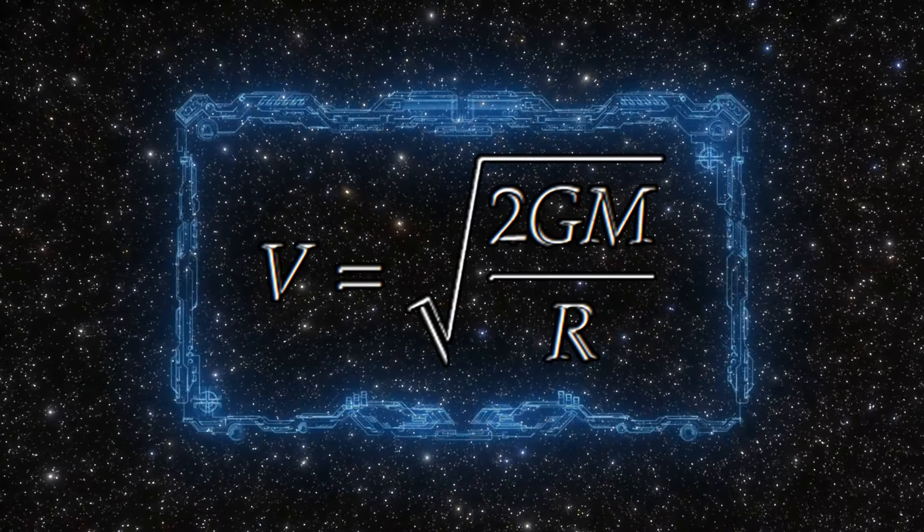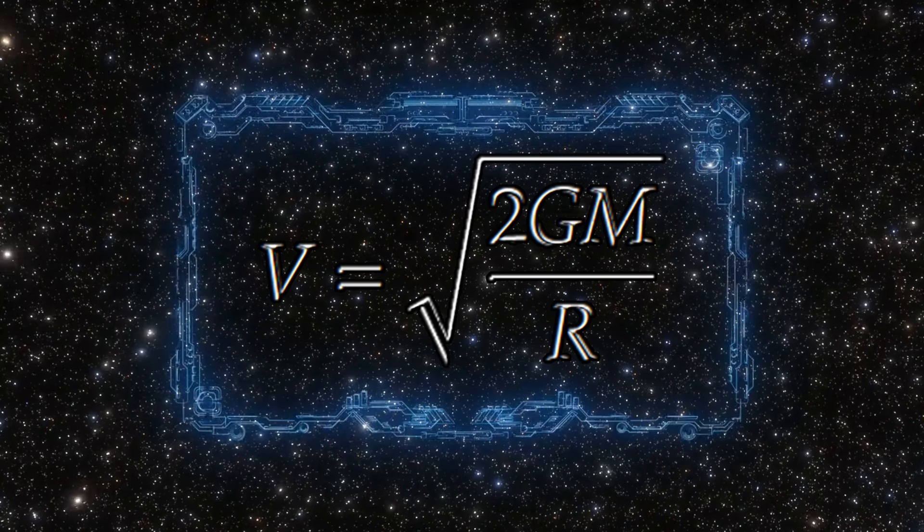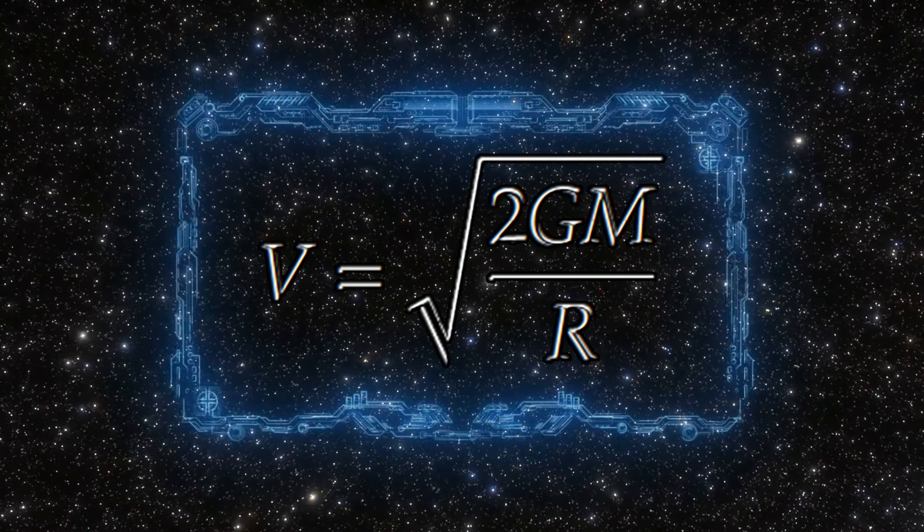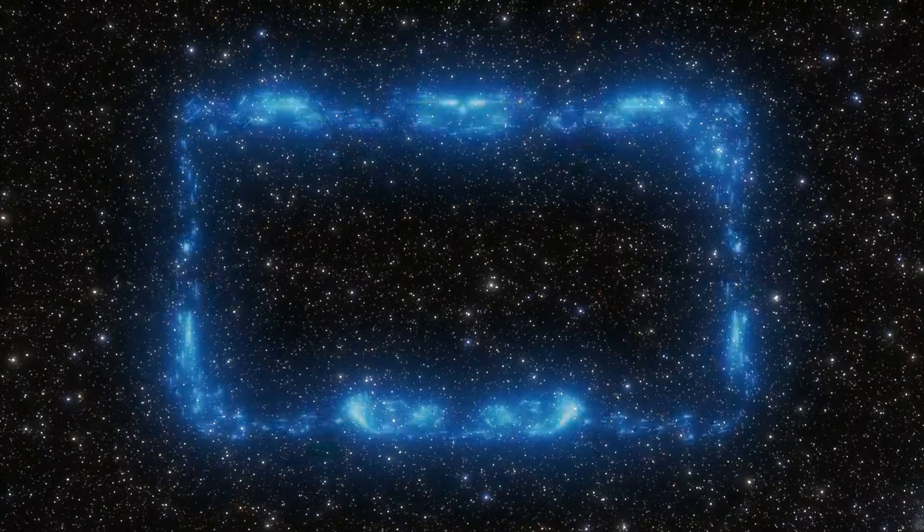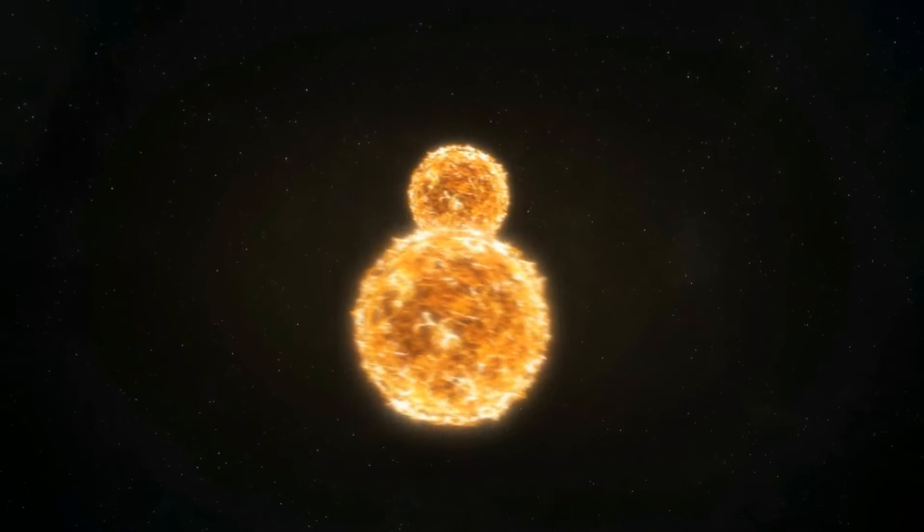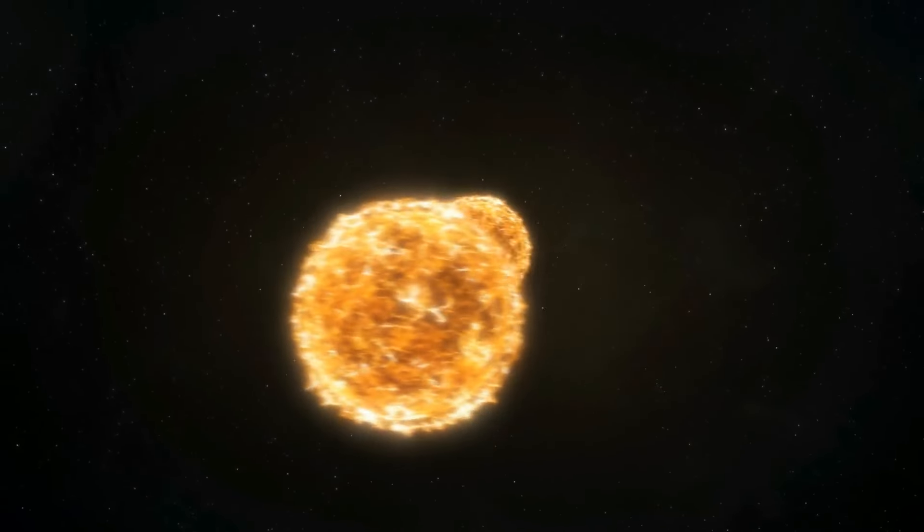Consider the escape velocity formula, where V is the escape velocity, G is the gravitational constant, M is the mass of the object being escaped from, in this case a supermassive black hole, and R is the distance from the center of mass to the point of escape. For a star to escape the gravitational pull of our Milky Way, especially near the supermassive black hole, it requires a substantial initial boost.